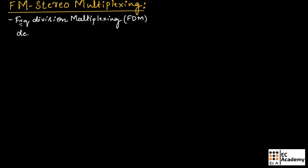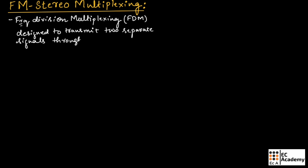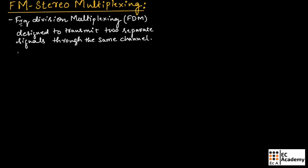FM stereo multiplexing is a form of frequency division multiplexing designed to transmit two separate signals through the same channel. Two different forms of signals will be transmitted through the same channel. The process is known as FM stereo multiplexing, and it consists of two parts.